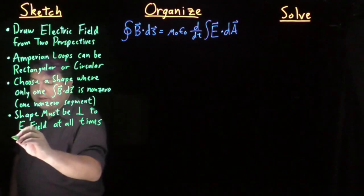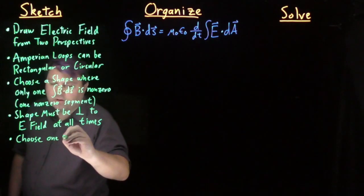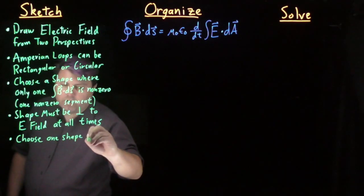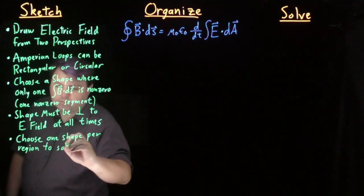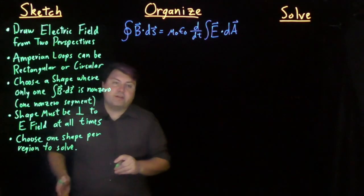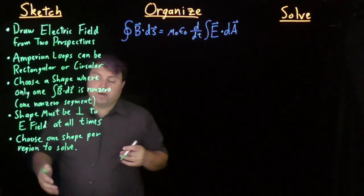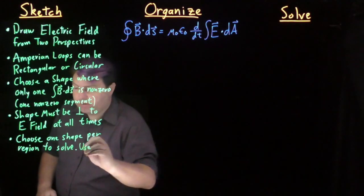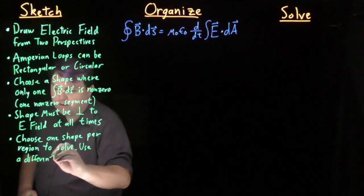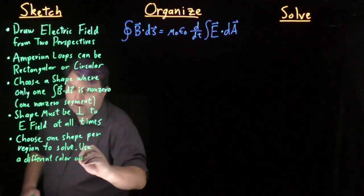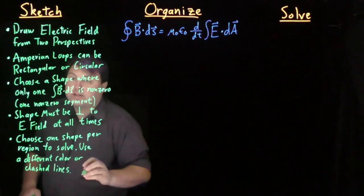So as we are doing this, then we want to choose one shape per region to solve. And to show that it's different than the electric field, different than any charge or current distributions, we want to use a different color or dashed lines.